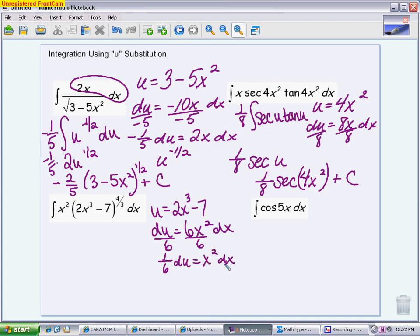So now when I go back to my problem, I know I'm going to put a 1 6th. I always put the adjustment out front. Now I'm going to look and say what's being done to the u. The u is being taken to the 4 3rds power. I'm going to integrate it. Power 1 greater would be 7 3rds divided by 7 3rds. So I'm going to get 3 7ths u to the 7 3rds. I'm also going to multiply by a 6th, so I'm going to reduce fractions a little bit. I get 1 over 2, so I get 1 14th. My u I'm going to put back in now is 2x to the 3rd minus 7 to the 4 3rds plus c.